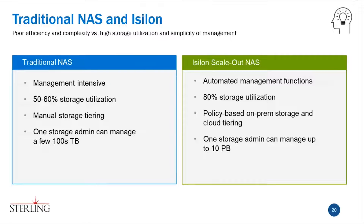Traditional NAS is management-intensive with lower storage utilization and manual or semi-automated tiering. As you expand, one storage admin can't manage as much space as they could on Isilon. Isilon scale-out has automated management functions you can set up and they run forever — 80% storage utilization, policy-based storage and cloud tiering that just runs without ongoing intervention when you add capacity. As a result, one storage admin can manage tens of petabytes easily.